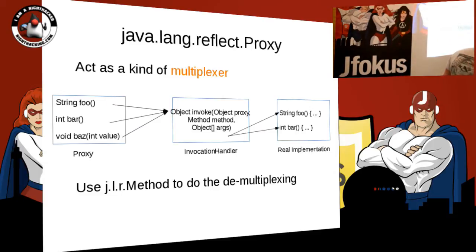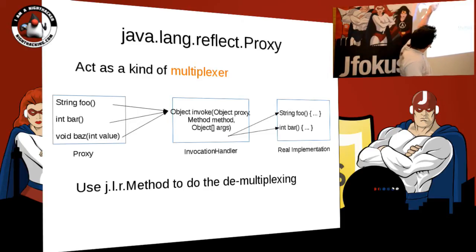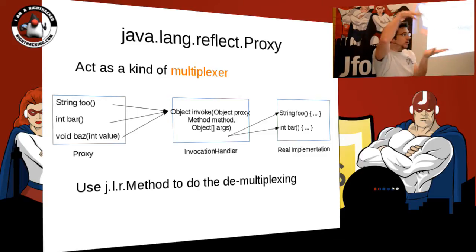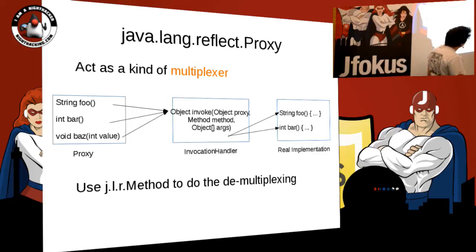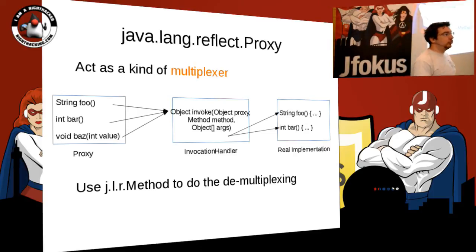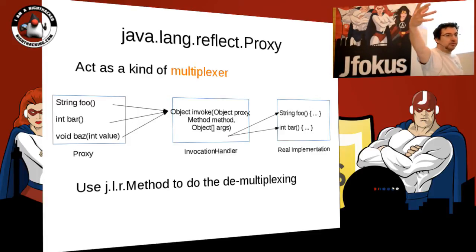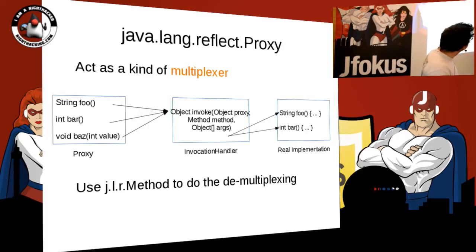So, how does java.lang.reflect.Proxy work? It works like a kind of multiplexer. You have your method, it goes into one invocation handler — one method. All calls go into one method, and inside it you have a java.lang.reflect.Method object. That Method object reifies the method itself — you can see the annotations, type parameters, and so on — and it's also something you can use to call the method. So you use the very same object for two purposes, and you can call invoke to go to the real implementation.